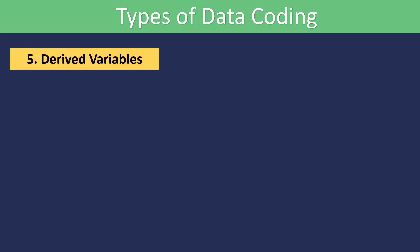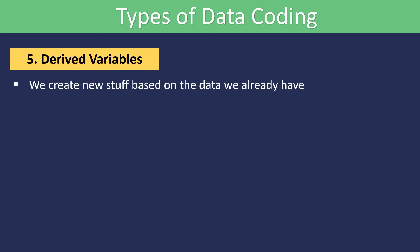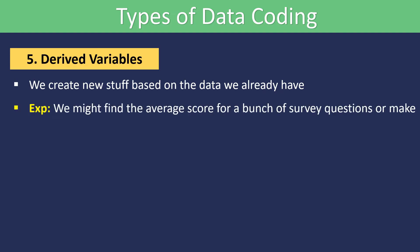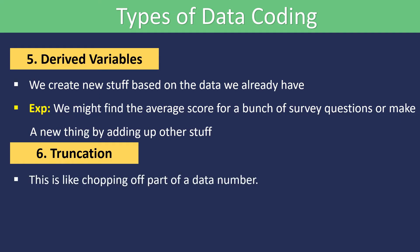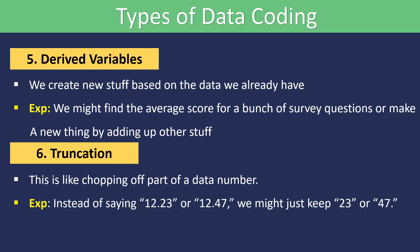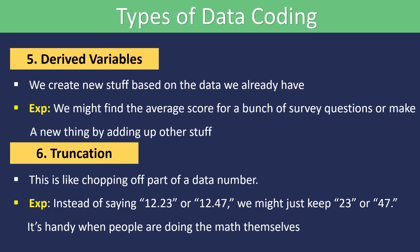Number five, derived variables. This means we create new variables based on the data we already have. We might find the average scores for a bunch of survey questions or make a new variable by adding up other items. Number six, truncation. This is like chopping off part of a data number. For example, instead of saying 12.23 or 12.47, we might just keep 23 or 47. It's handy when people are doing the math themselves.